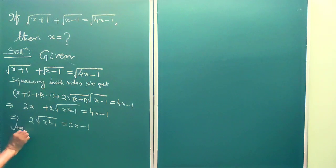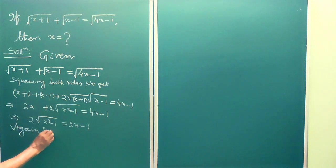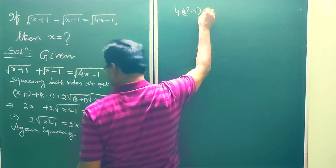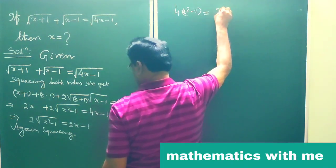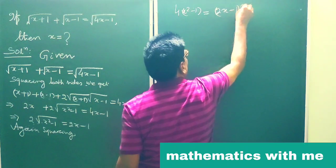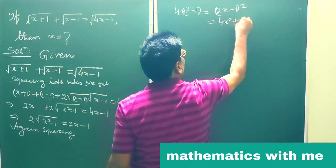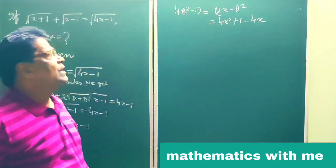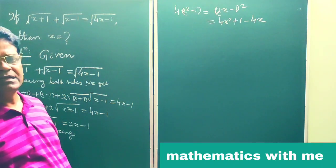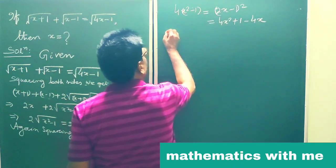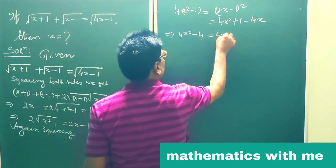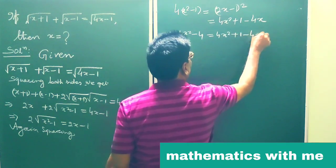Again, squaring both sides. On the right side we get (2x minus 1) squared, which expands as a squared plus b squared minus 2ab, giving 4x squared plus 1 minus 4x.